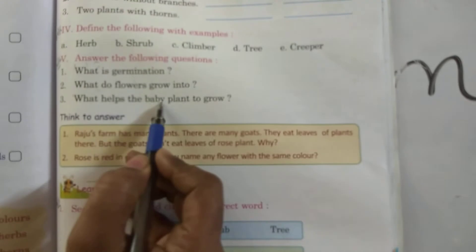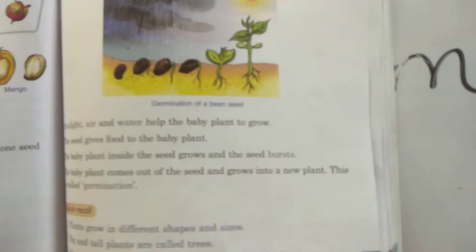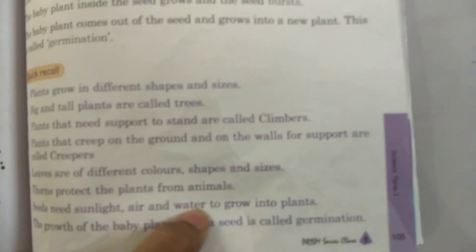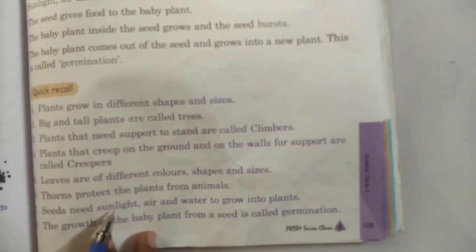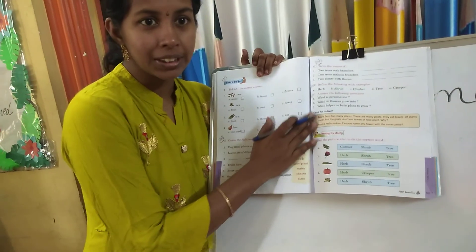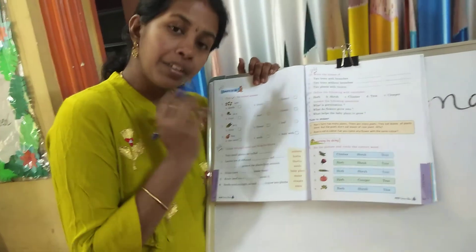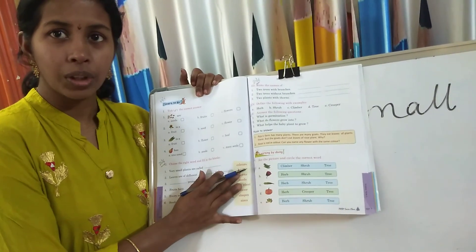Who helps the baby plant to grow? Sunlight, air and water help the baby plant to grow. Now you have understood the quick recall and question and answers. Study these three questions and answers at home.